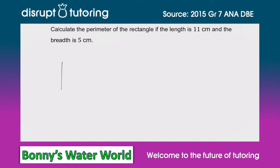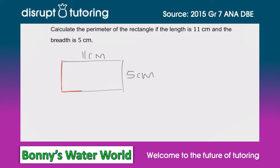Your rectangle looks something like this. The length they've given us is 11 centimeters, and the breadth they've given us is 5 centimeters. Now, in order to work out the perimeter, we need to calculate the entire distance around the rectangle.